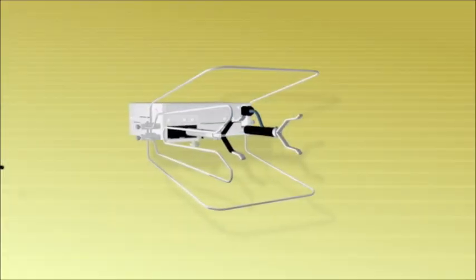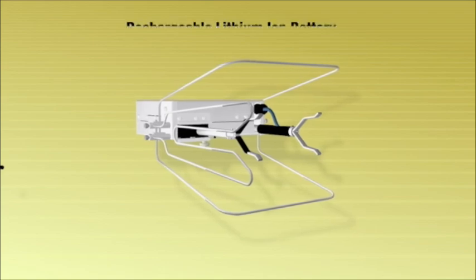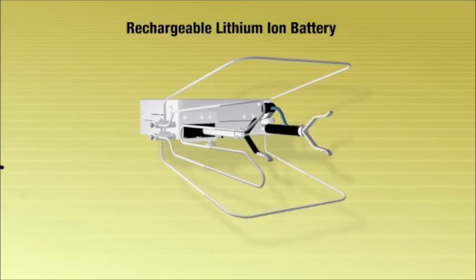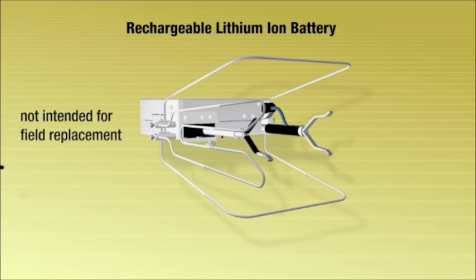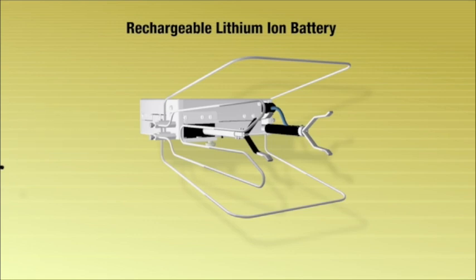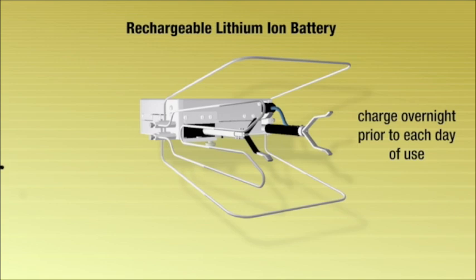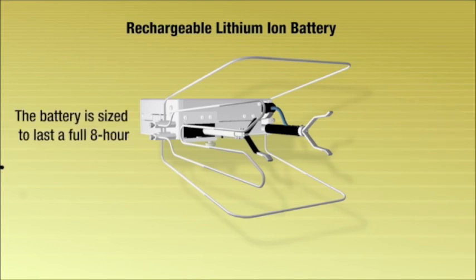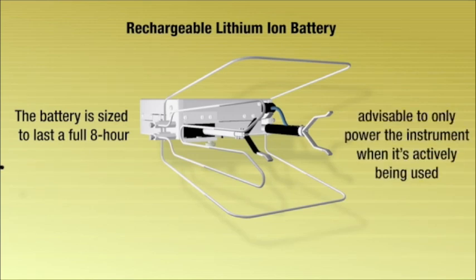The polymer insulator tester uses a rechargeable lithium ion battery pack located inside the unit. The battery is expected to provide a good service life and is not intended for field replacement. The battery pack should be fully charged overnight prior to each day of use. The battery is sized to last a full 8 hour day, but it is advisable to only power the instrument when it is actively being used.